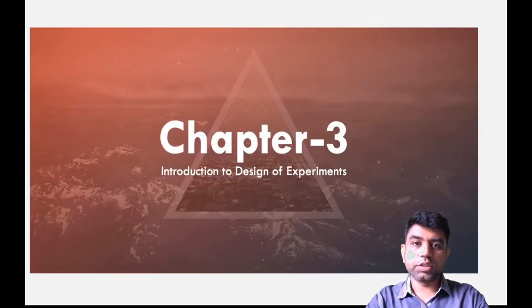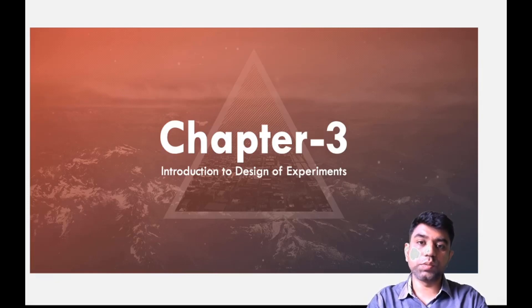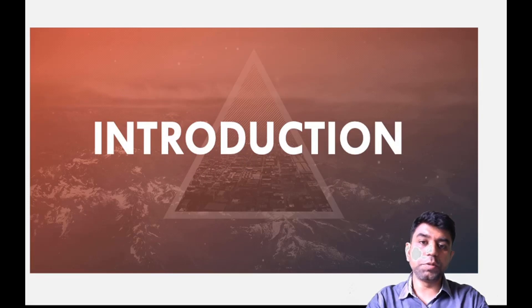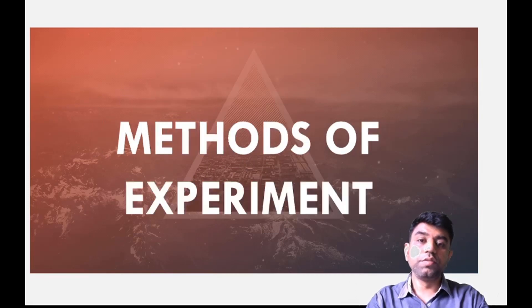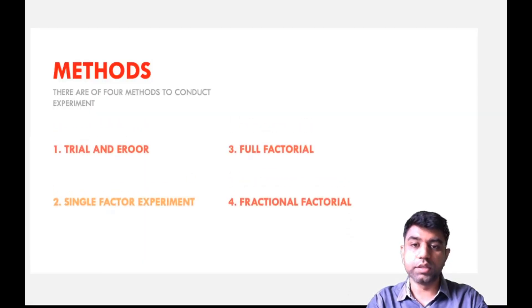Since the last lecture we have started with chapter number three, that is Introduction to Design of Experiment, which is a useful concept of quality as well as for conducting any experiment. The concept says that plan your experiment well in advance and decide your input factors properly so that you can get a better output — that is the main concept of design of experiment. In this introduction section we were discussing about different methods to carry out the experiment, and we already discussed the first two methods: trial and error and the single factor experiment method.